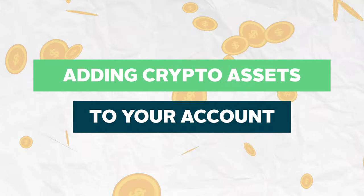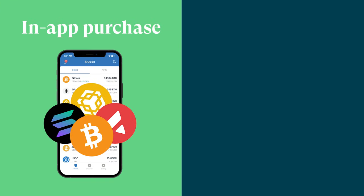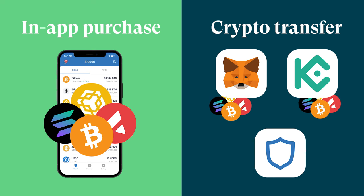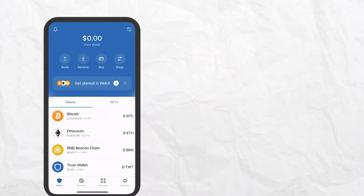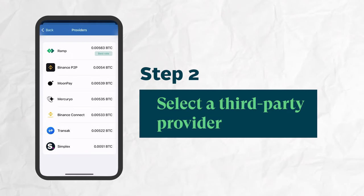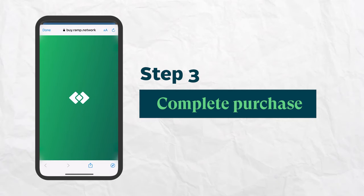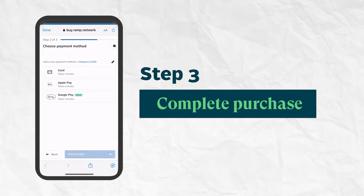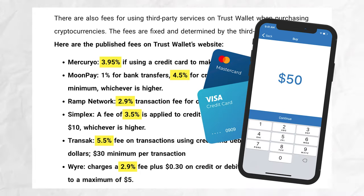To start using the wallet, you'll need to get hold of some funds. You can either purchase crypto directly from the app or transfer crypto from another wallet or exchange. To purchase directly, tap the Buy button on the home screen, select the crypto you want to buy, and you'll be quoted the best exchange rate from one of their several third-party providers. Click Buy and you'll be redirected to a payment gateway where you can make your purchase via debit or credit card. Do note that there is a $50 minimum purchase requirement and there are typically higher fees involved when purchasing directly with your card.